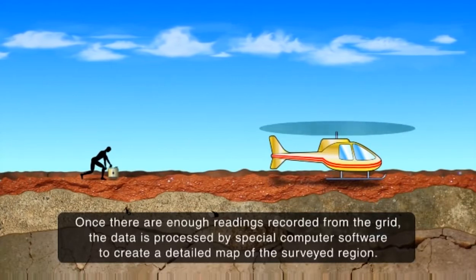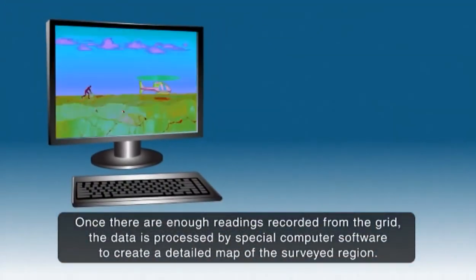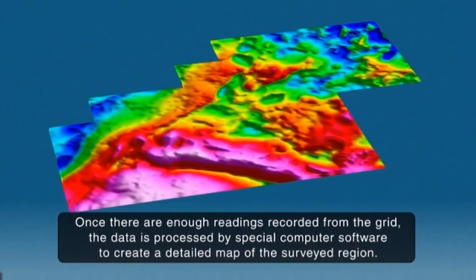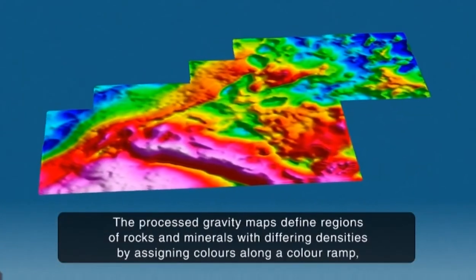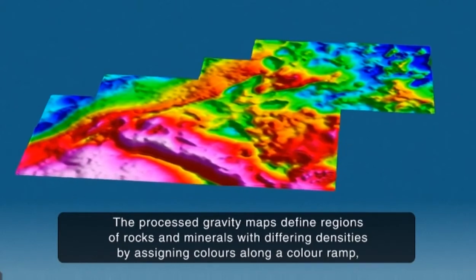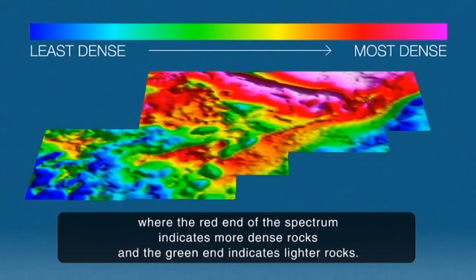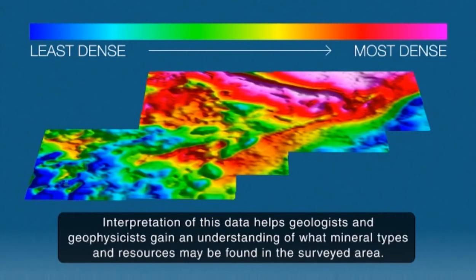Once there are enough readings recorded from the grid, the data is processed by special computer software to create a detailed map of the surveyed region. The processed gravity maps define regions of rocks and minerals with differing densities by assigning colours along a colour ramp, where the red end of the spectrum indicates more dense rocks and the green end indicates lighter rocks. Interpretation of this data helps geologists and geophysicists gain an understanding of what mineral types and resources may be found in the surveyed area.